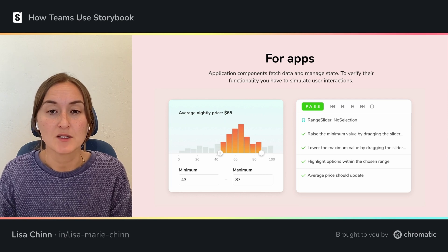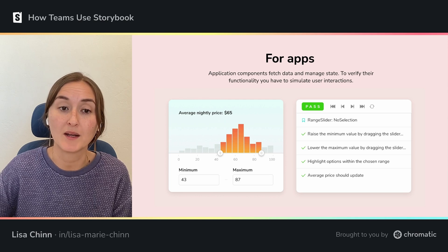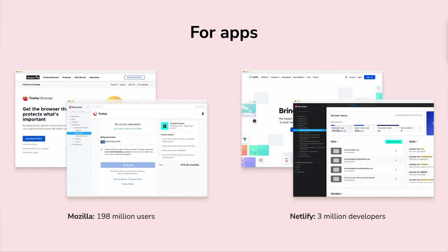Storybook's new interaction testing feature allows you to test component behavior along with how the component actually looks. A couple of examples of application teams that use Storybook are Shopify, which has over 649 million customers, VS Code, which has 14 million users, Mozilla, who uses Storybook to test a checkout workflow within their Firefox ecosystem, and Netlify, who uses Storybook to test the Netlify platform.